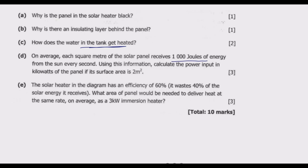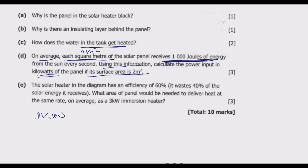Question (d): On average, each square meter of the solar panel receives 1000 joules of energy from the Sun every second. Using this information, calculate the power input in kilowatts of the panel if its surface area is 2 meters squared. Note that 1 kilowatt equals 1000 joules per second, so 1 meter squared gives 1 kilowatt.